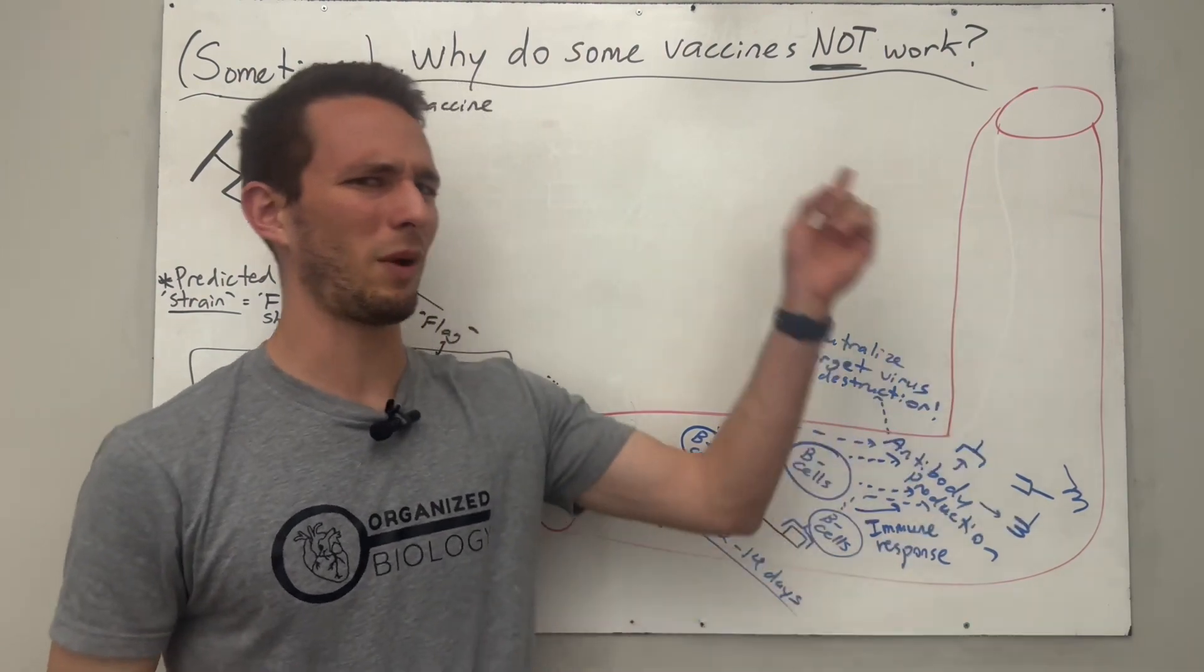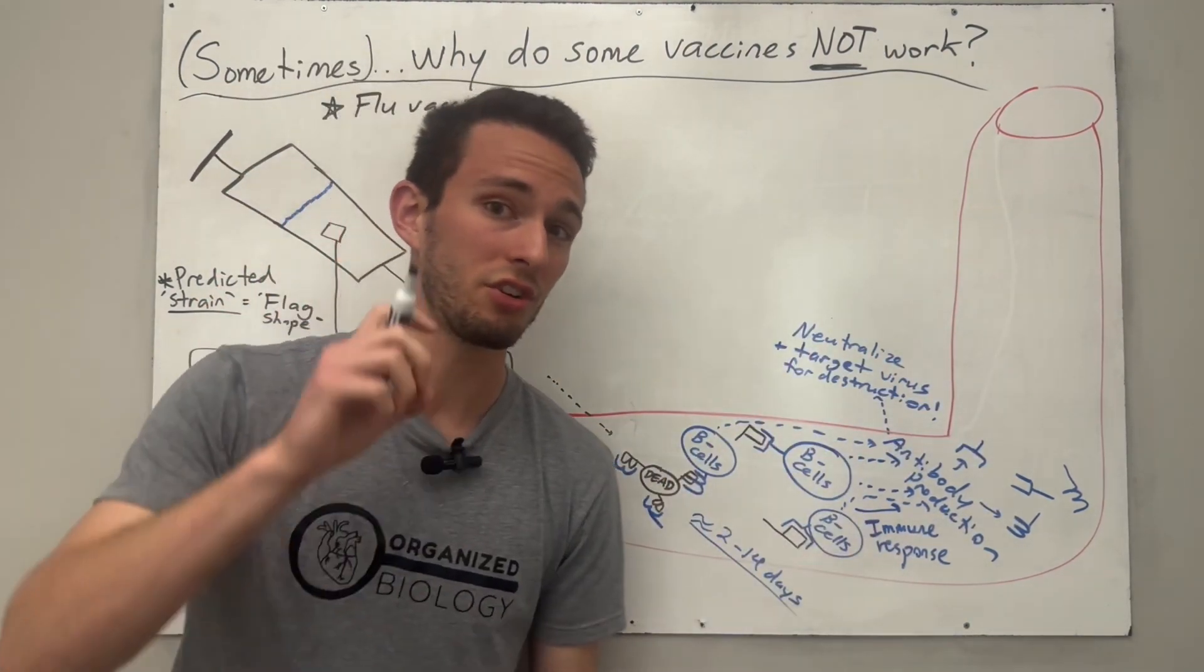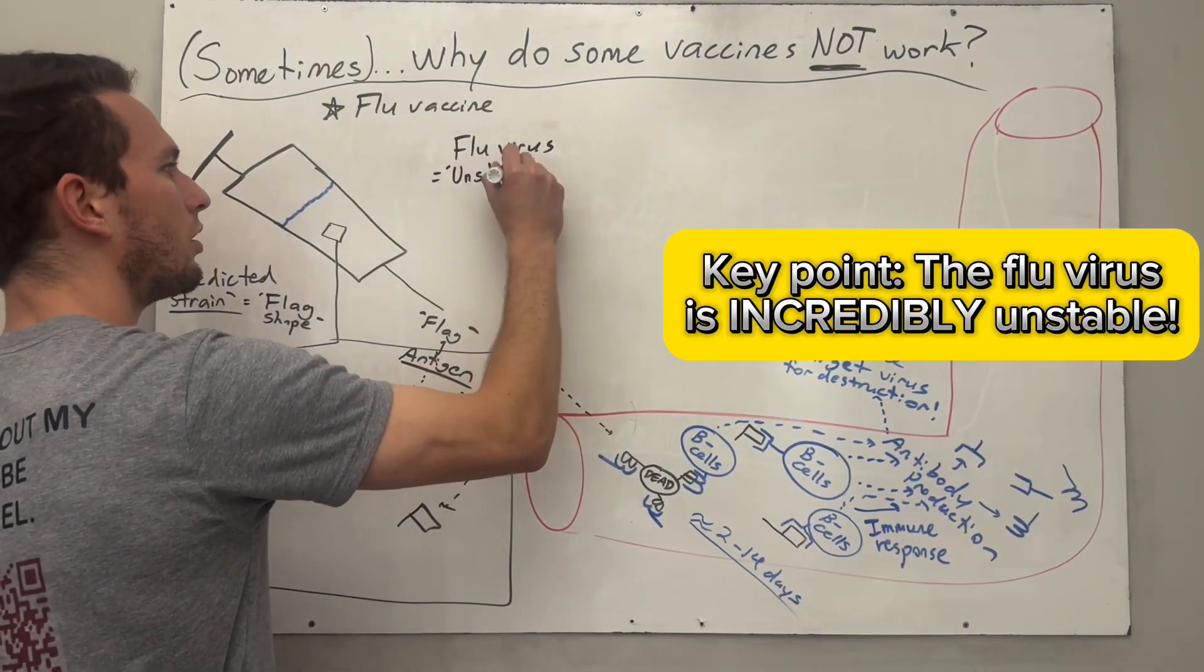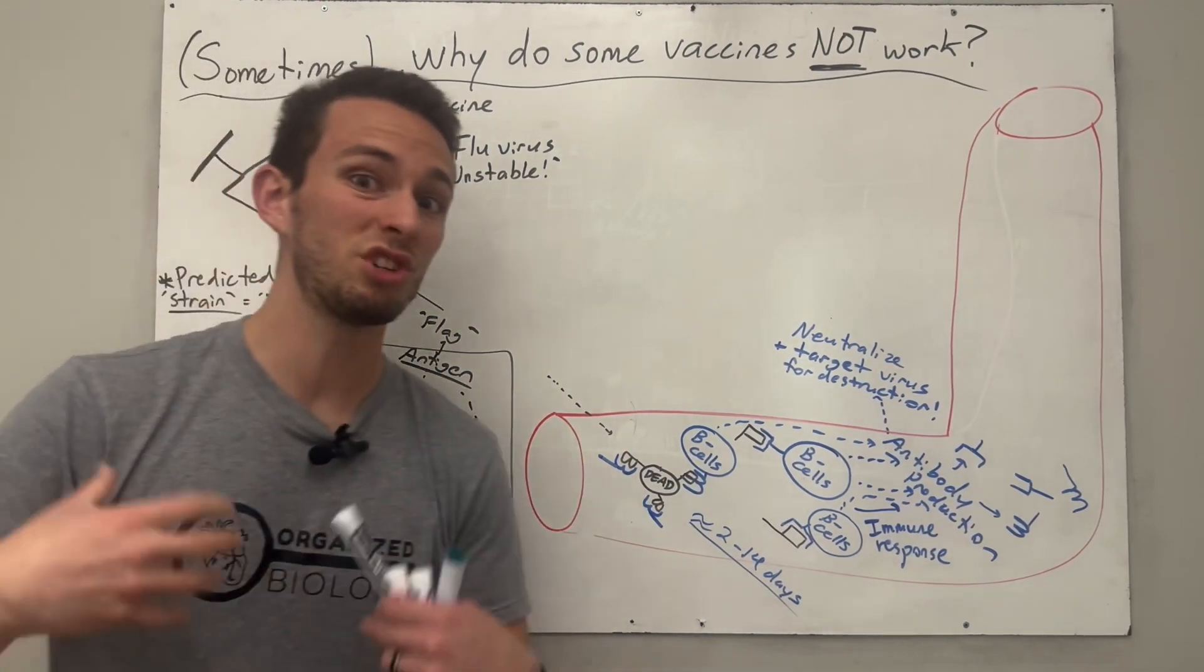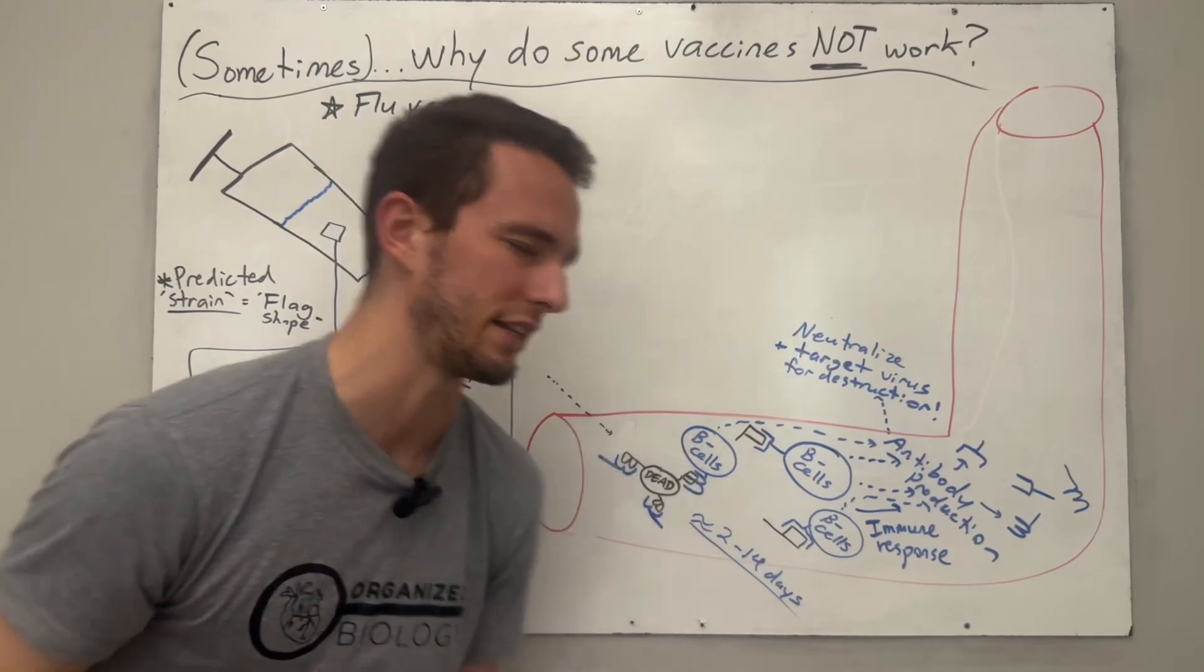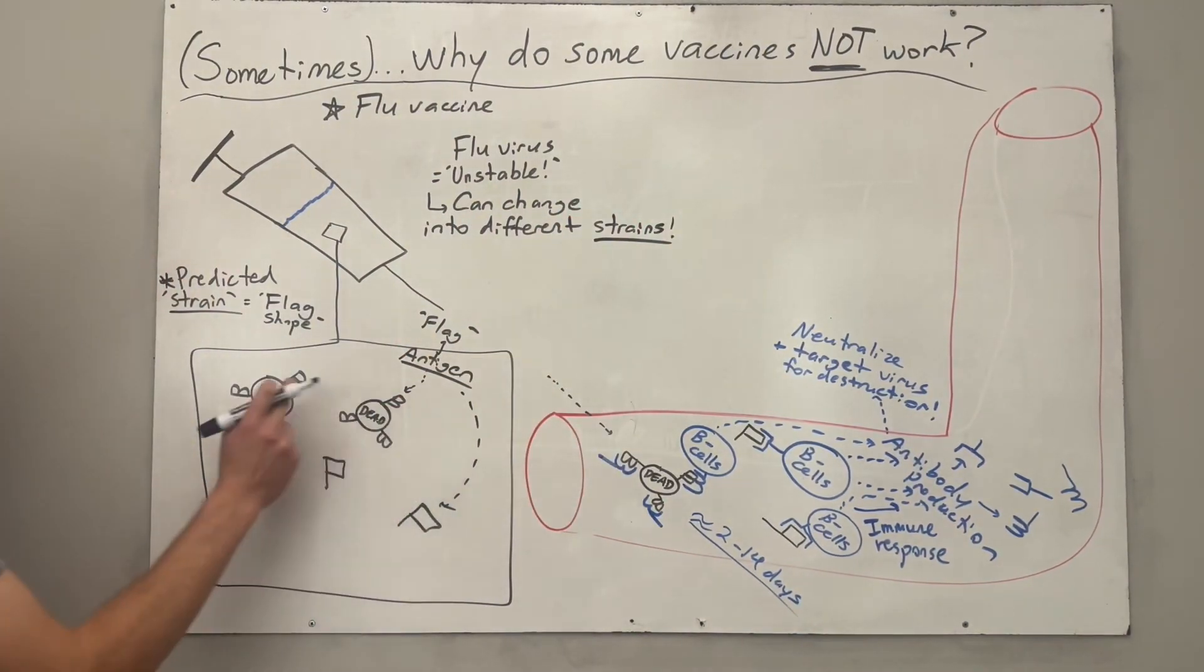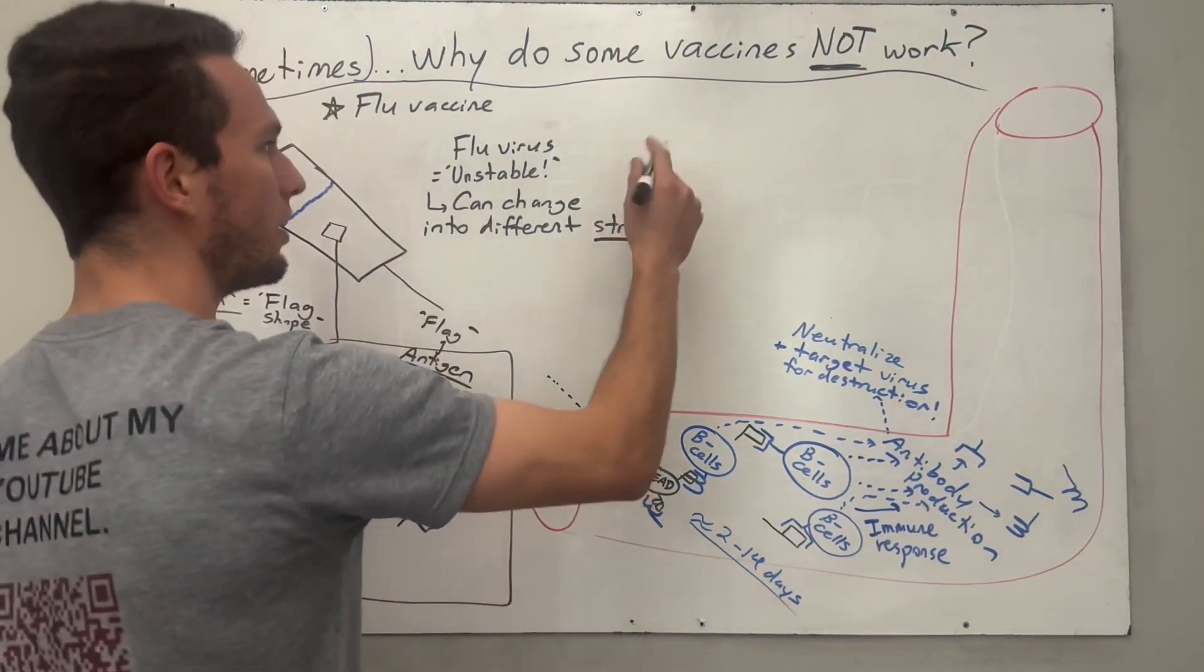You're asking the question, but we're talking about why vaccines don't work, not how they do work, right? Well, in order to understand how that works, you have to understand that the flu virus is incredibly unstable. And that means that the flu viruses themselves like to change themselves. They like to basically turn into a whole bunch of different strains. Now remember, strains were just basically the shape of the flag, right? So I'm saying that these viruses like to alter their flag's shape. Now what is that called? A mutation.